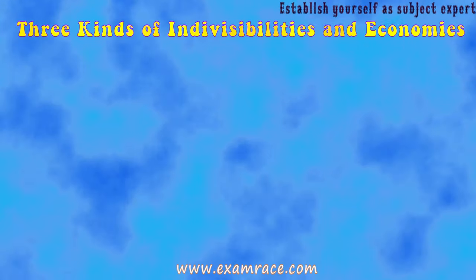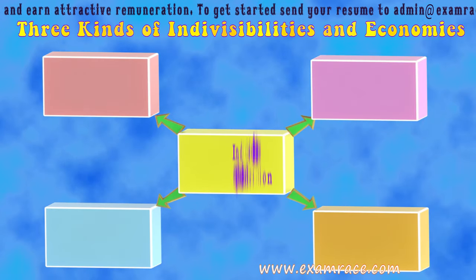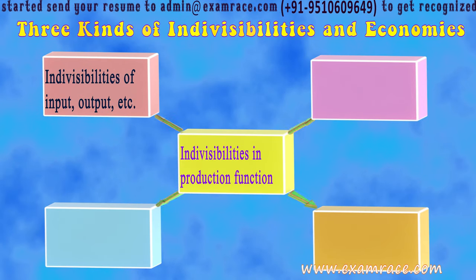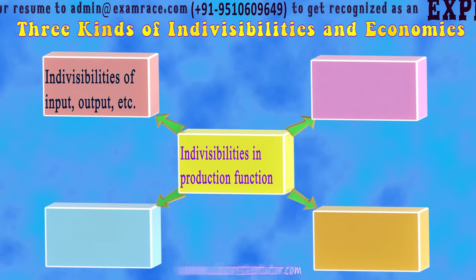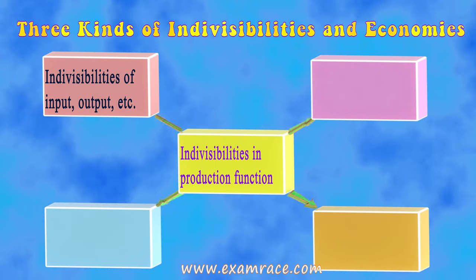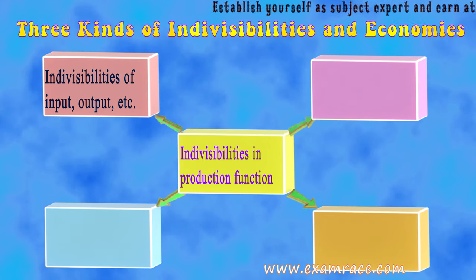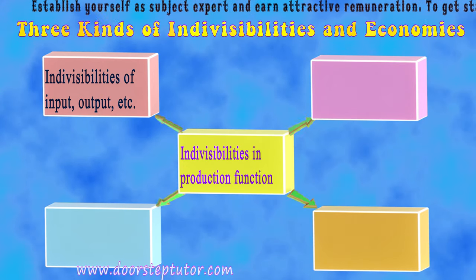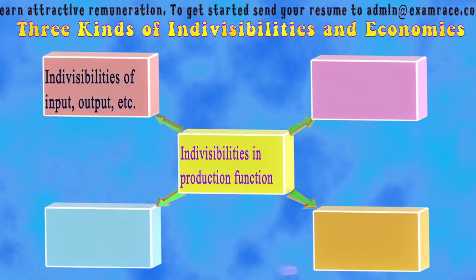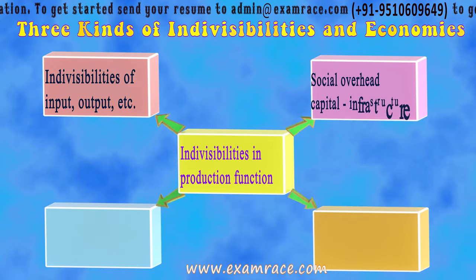Rosenstein proposed three kinds of indivisibilities and economies of scale to identify where the big push needs to be applied. The first is indivisibility in the production function, which refers to indivisibilities of input, output, and process of production. It leads to increased returns — an increase in output, income, and employment — and lowers the capital-output ratio.